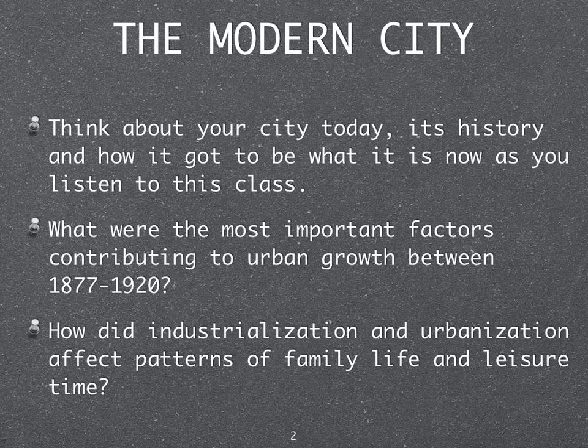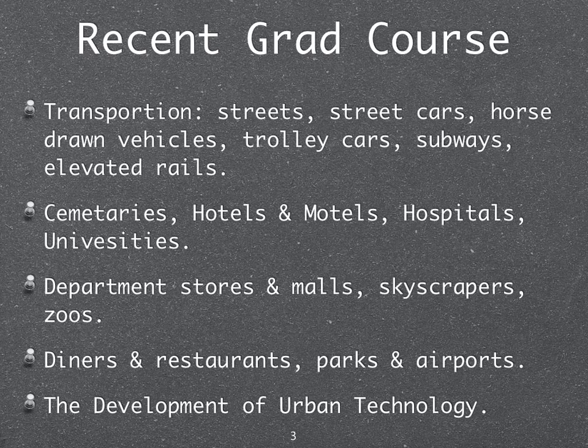Last spring I took a graduate course in American history all about the growth of the city. We studied transportation, streetcars, horse-drawn vehicles, trolley cars, subways, and elevated railroads — everything people needed to get around cities 100 to 125 years ago. We also studied cemeteries, hotels, hospitals, universities, department stores, malls, skyscrapers, zoos, diners, restaurants, parks, and airports — the development of what it took to turn small communities into large metropolitan areas.